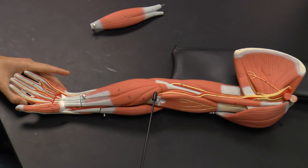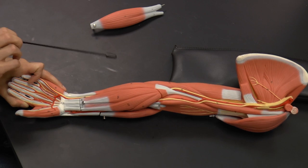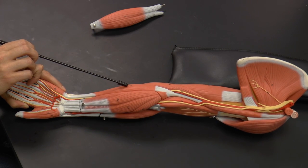And again, just for completeness sake, here's the pronator teres, the flexor carpi radialis, the palmaris longus, and the flexor carpi ulnaris.